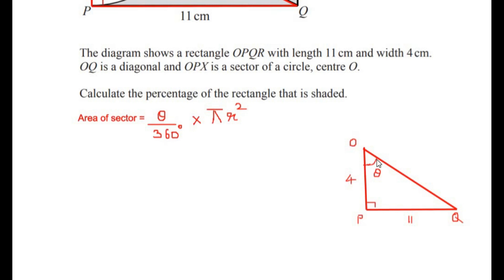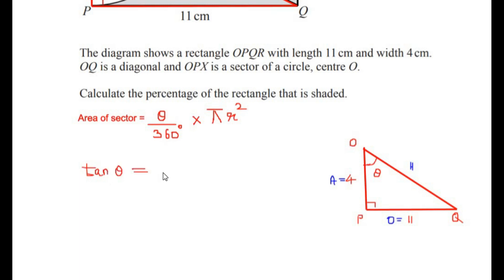Since θ is at point O, the side opposite to angle θ is the opposite side, the side opposite to 90° is the hypotenuse, and the remaining side is the adjacent. Since we have the opposite side and the adjacent side, we use tan θ — because tan is opposite over adjacent. So tan θ = opposite/adjacent = 11/4.